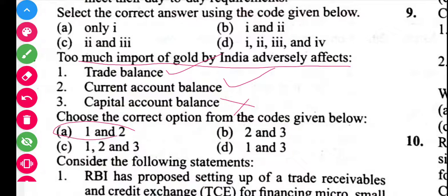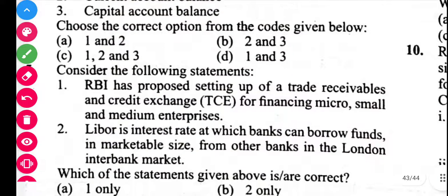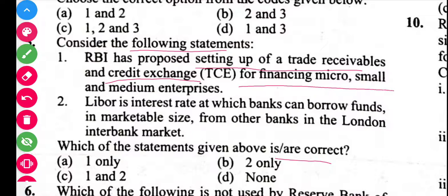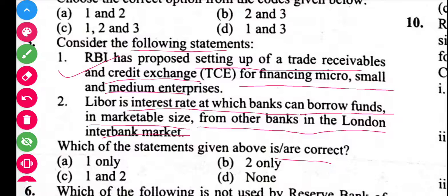The answer is A. Next question is related to RBI. RBI has proposed setting up of trade receivables and credit exchange for financing micro, small and medium enterprises. LIBOR is the interest rate at which banks can borrow funds in marketable size from other banks in the London Interbank market. Both statements are correct, so the answer is C.